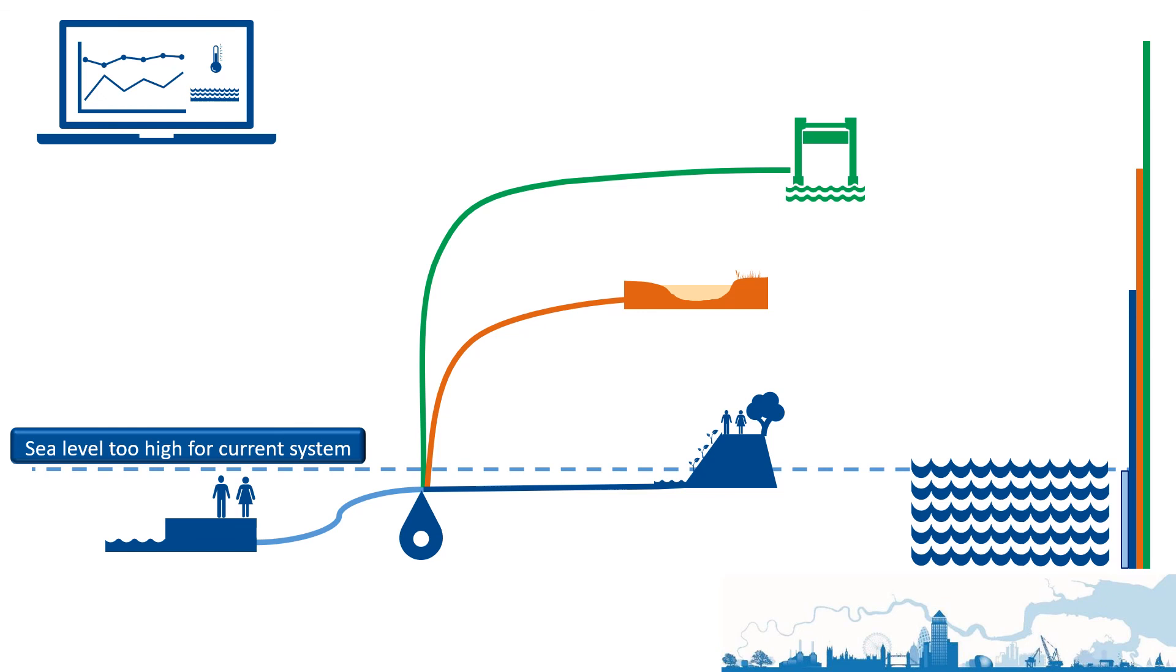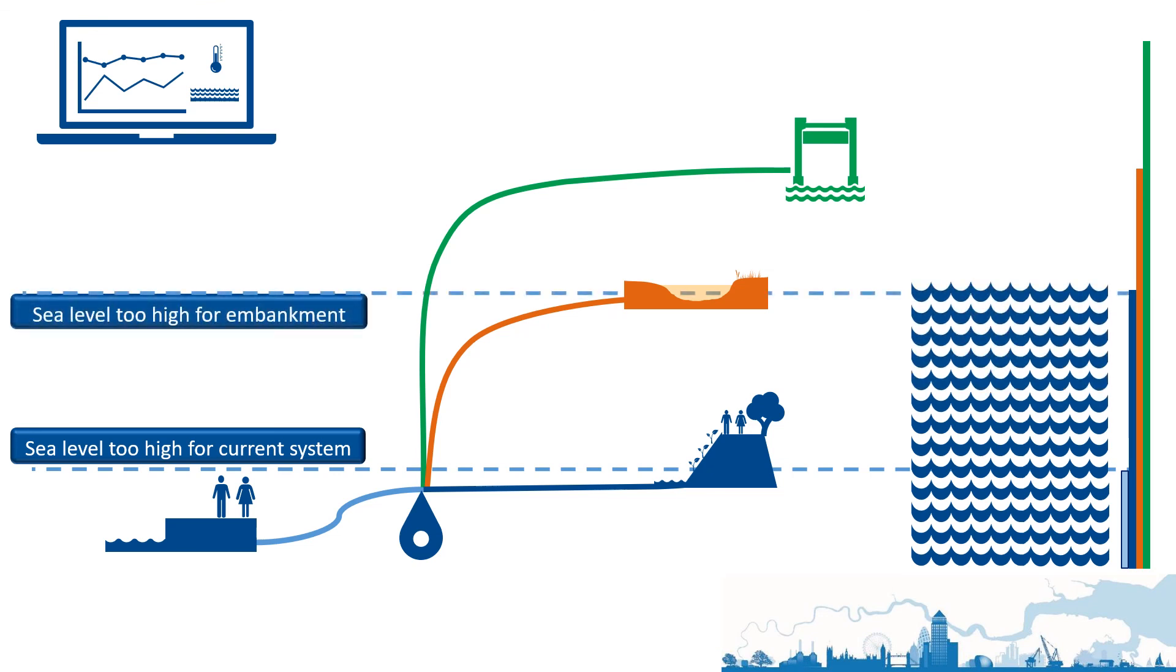For instance, if we initially go for the embankment, then at a much later date, if sea level approaches the threshold where the embankment will no longer be effective, we will reach another decision point and choose the best option for flood protection at that time.